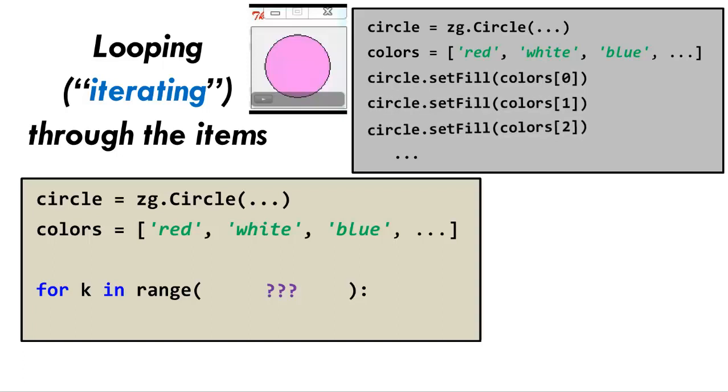Inside the loop, we have a single statement that is very similar to the set fills that we had in our previous attempt. Now the question is, what do we want inside the square brackets? Pause for a moment to think about this key question.